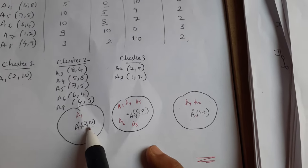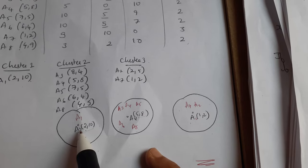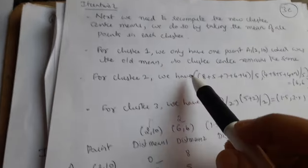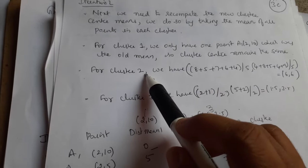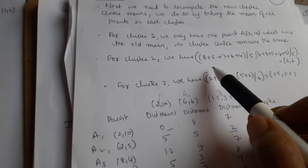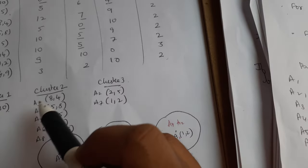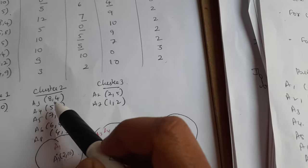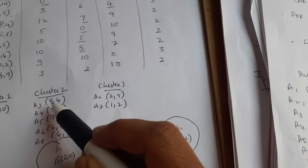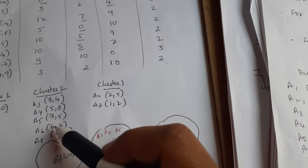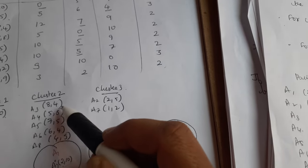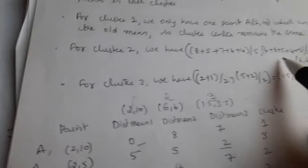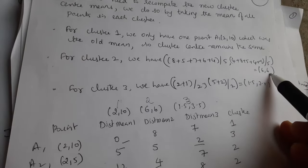Cluster 1 was assigned A1 at (2, 10), so it remains the same cluster center. For cluster 2, we have five data points: A3, A4, A5, A6, and A8. Taking the mean: x = (8+5+7+6+4)/5 and y = (4+8+5+4+9)/5, giving us the new centroid (6, 6).